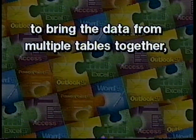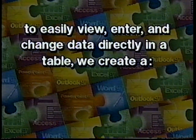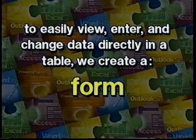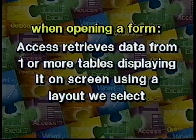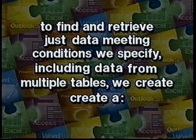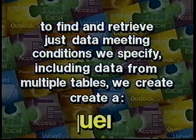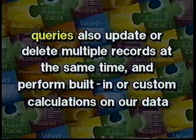An Access database file is an accumulation of all the objects that make up the collection of information. Within a database file, we divide our data into separate storage containers called tables. We create one table for each type of information we track. To bring the data from multiple tables together, we define relationships between the tables. To easily view, enter, and change data directly in a table, we create a form. When we open a form, Access retrieves the data from one or more tables and displays it on screen using a layout we select. To find and retrieve just the data that meets conditions we specify, including data from multiple tables, we create a query. A query can also update or delete multiple records at the same time and perform built-in or custom calculations on our data.